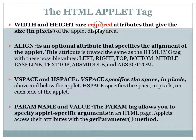The next important optional attribute is param. The param attribute has a name and a value and is similar to command-line arguments. Just as command-line arguments allow us to pass arguments to a Java program from the terminal, the param tag allows us to pass arguments to an applet program from the HTML page. These param tag attributes can be retrieved using the getParameter method.